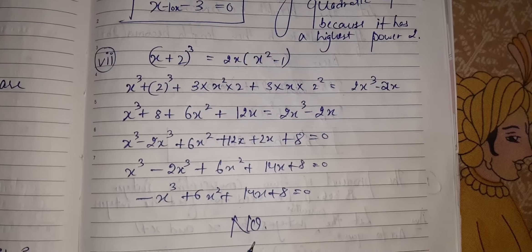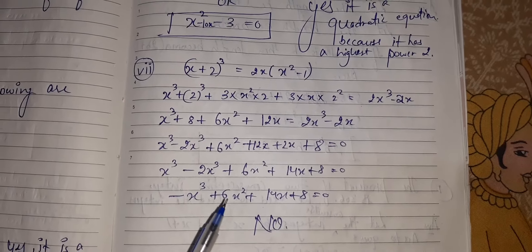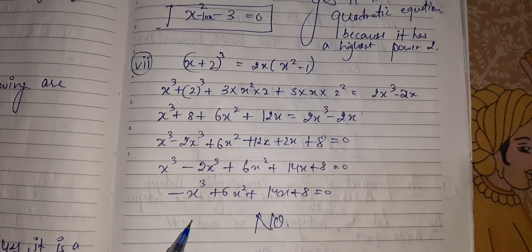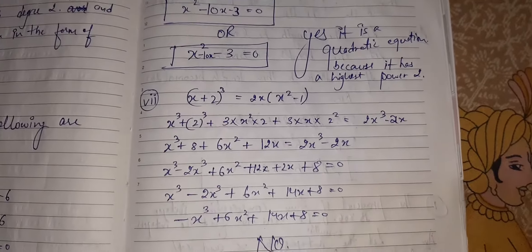Now, it is not a quadratic equation because it consists of X cubed. A quadratic equation consists of X squared, but it is having X cubed. That is why it cannot be a quadratic equation. It will be a cubic equation. Got it?